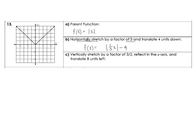And then in part C, we're going to have that same function, but now I want a vertical stretch by a factor of 3 halves. So vertical is on the outside – I want this reflected over the x-axis, which is outside – and then translate 8 units to the left, so that's going to be on the inside. We have our absolute value of x, translating 8 units left – I need to put a plus 8 on the inside – vertical stretch of 3 halves on the outside – and then reflect over the x-axis means I need a negative there.